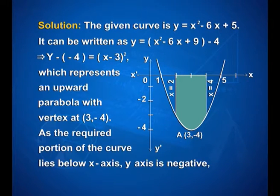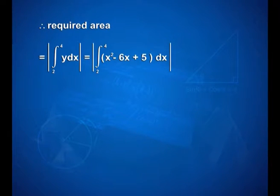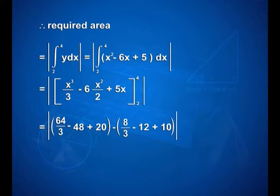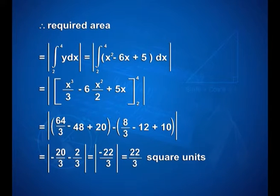As the required portion of the curve lies below the x axis, y is negative. Therefore, required area is equal to the modulus of integral 2 to 4 of (x square minus 6x plus 5) dx. That gives modulus of [x cube upon 3 minus 3x square plus 5x] with limits 2 and 4, which equals modulus of (64/3 minus 48 plus 20 minus 8/3 minus 12 plus 10), that is equal to modulus of minus 22/3. The absolute value is 22/3 square units.